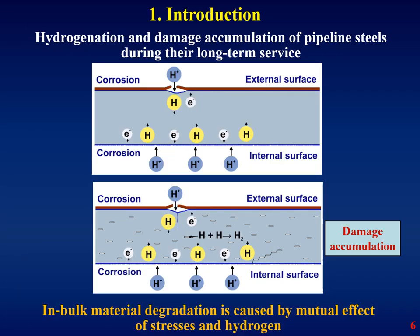Steel degradation will be caused not only due to working stresses but by the simultaneous effect of stresses and hydrogen under operation. It should also be noted that this process can occur over long distances of pipeline, in spite of the external surface being located in certain places of disbonded isolated coating. So in this talk we would like to concentrate on the role of hydrogen in operational degradation of pipeline steel.